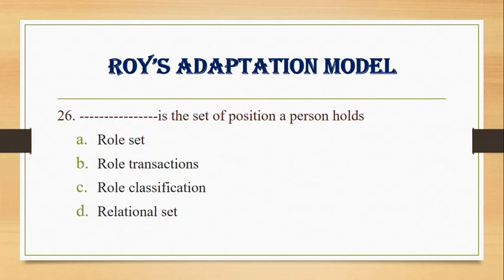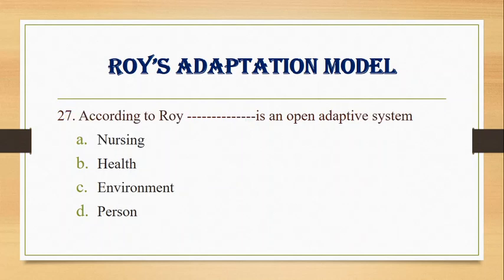Number 26. The set of positions a person holds is: A. Role set, B. Role transactions, C. Role classification, D. Relational set. Answer: A. Role set. Role set is the set of positions a person holds according to Roy's adaptation model.